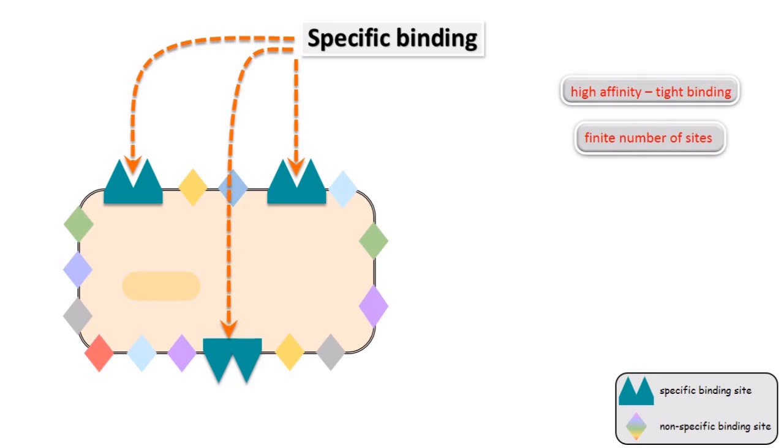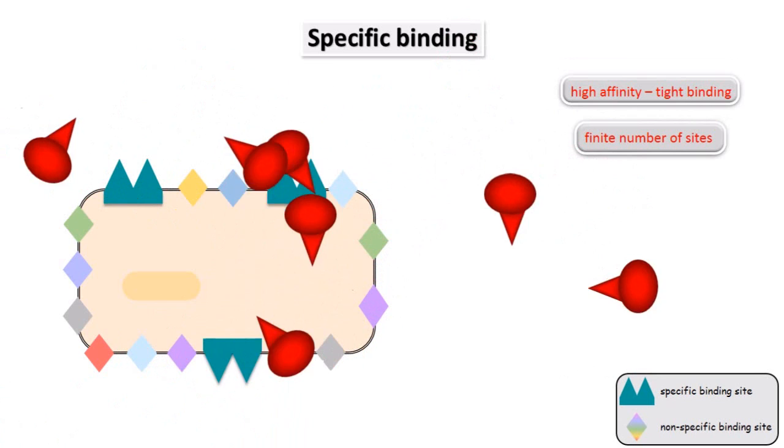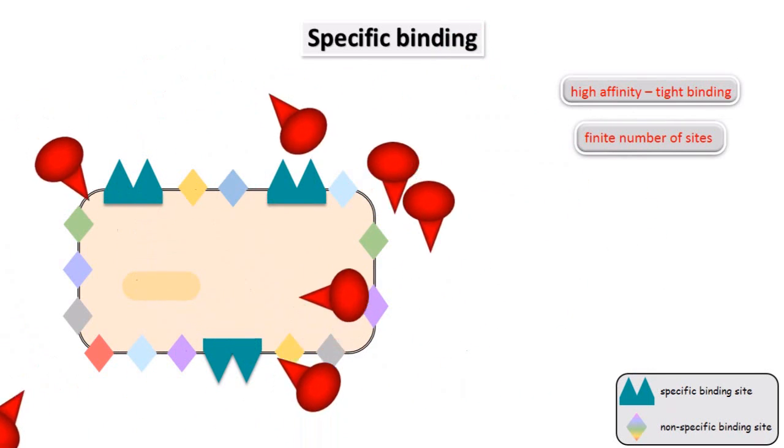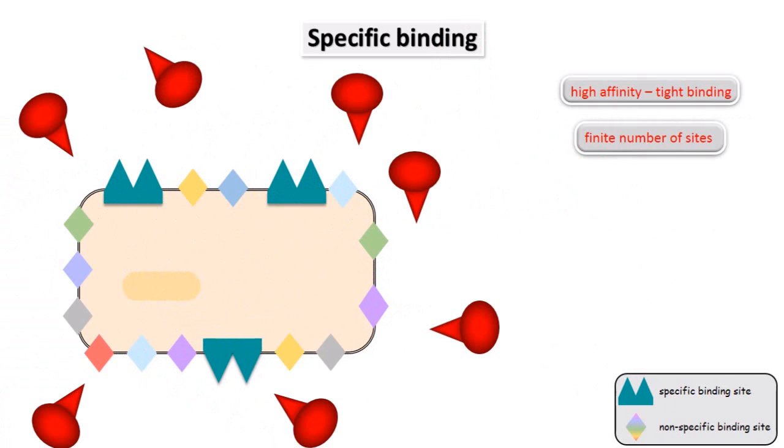So we are now going to add a radio-labeled ligand, also known as a hot ligand. When added to a solution, ligand molecules move around randomly and continuously. As ligand molecules come into contact with the specific binding sites, they may interact and dwell there for a short time, before leaving and moving around again. So ligand molecules constantly bind and unbind, and move away again.